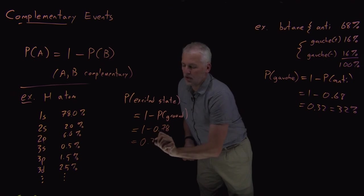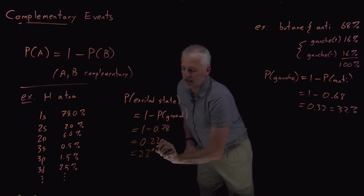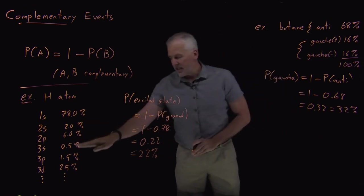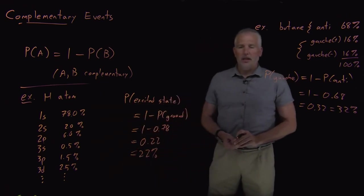So there's 1 minus a 78 percent chance or a 22 percent chance that the molecule is in one of these excited states. So all these excited states are going to sum up to 22 percent because I know the whole list has to add up to 100 percent.